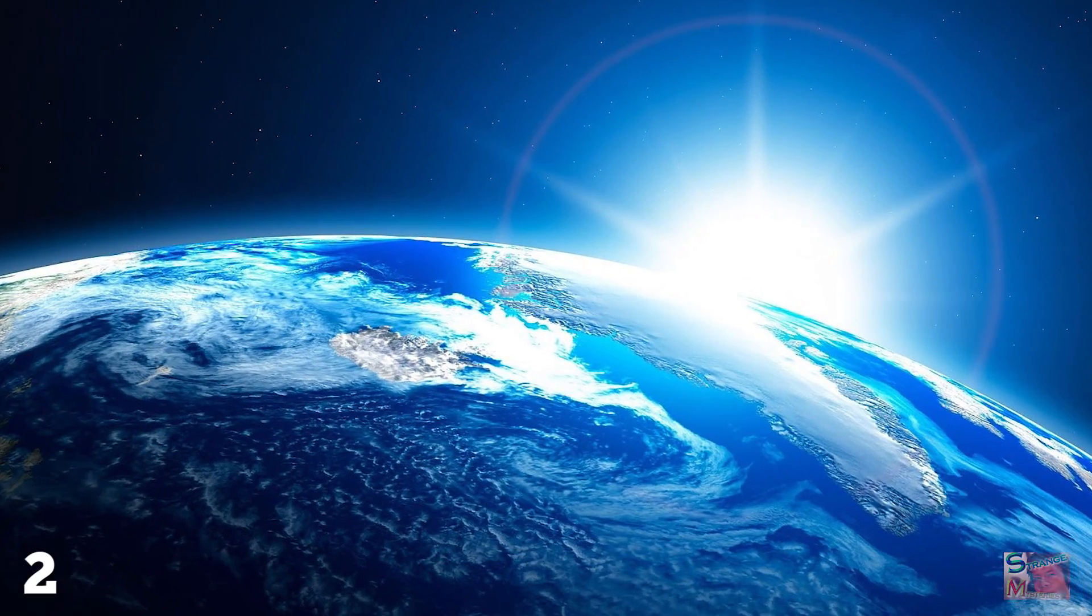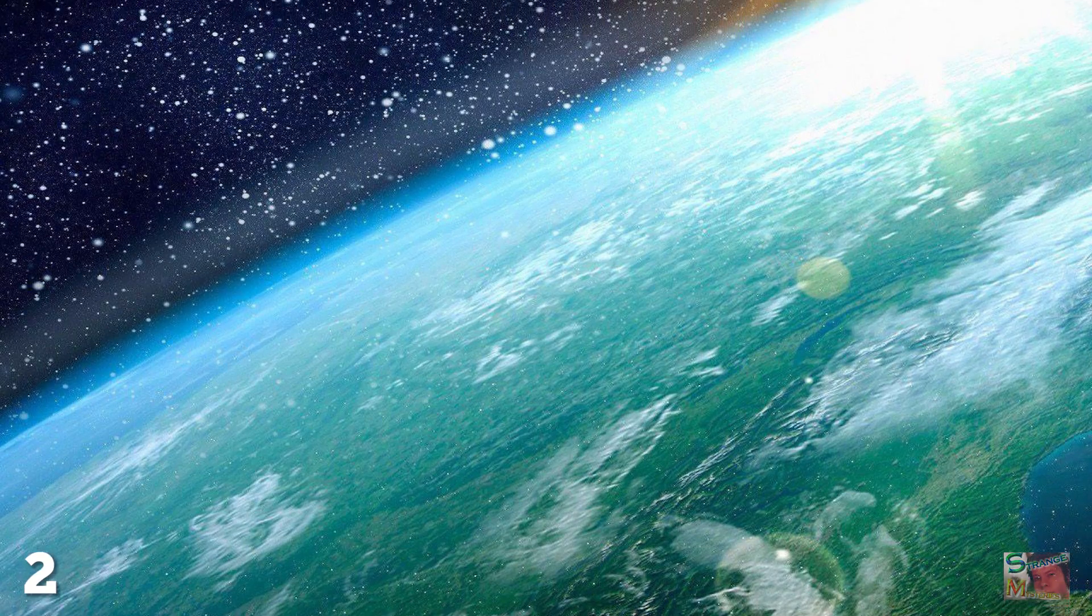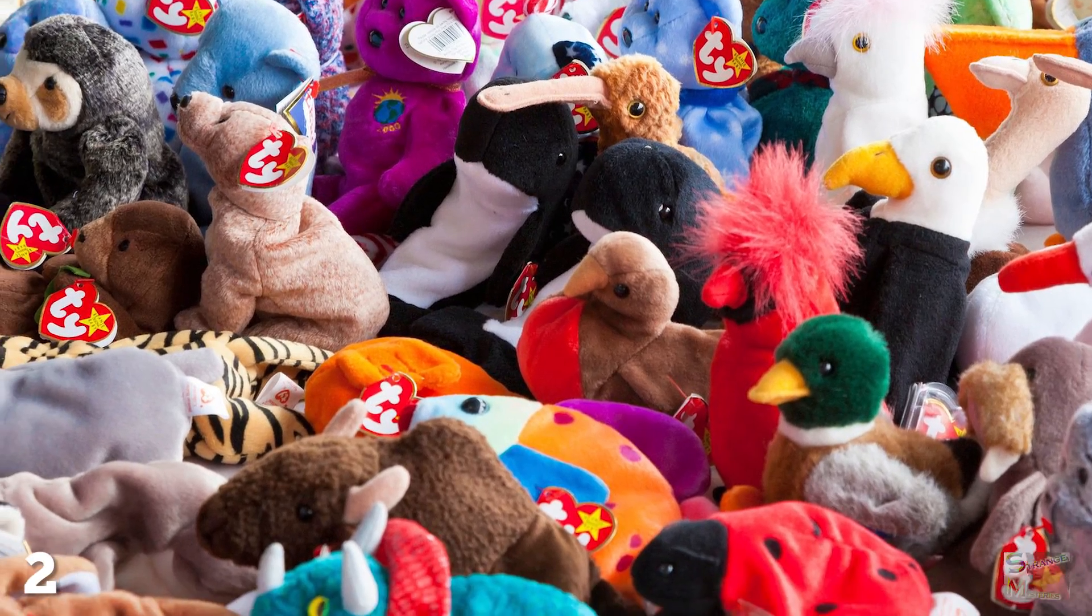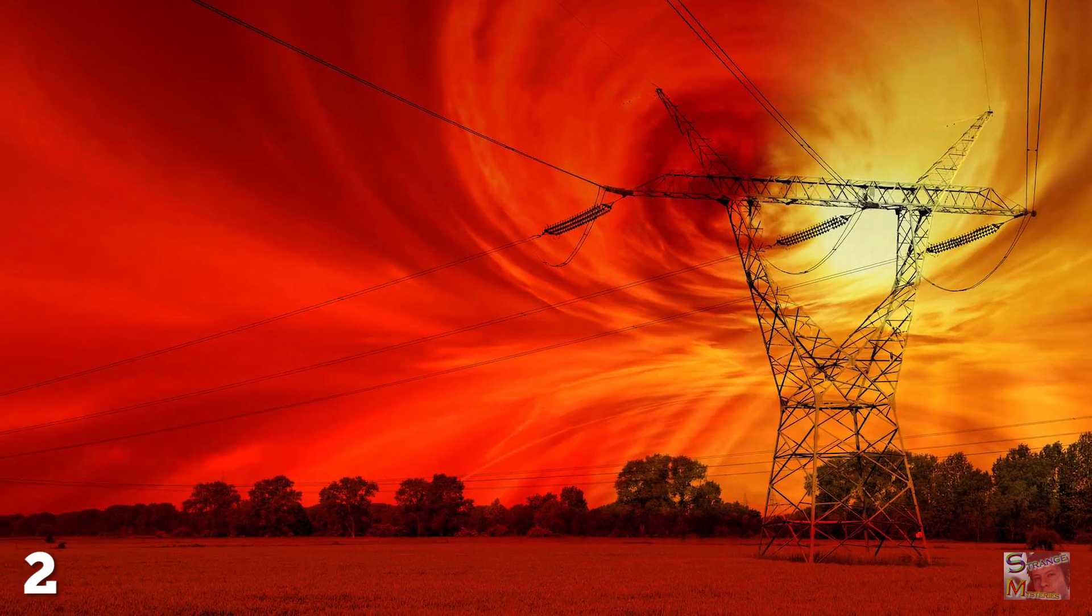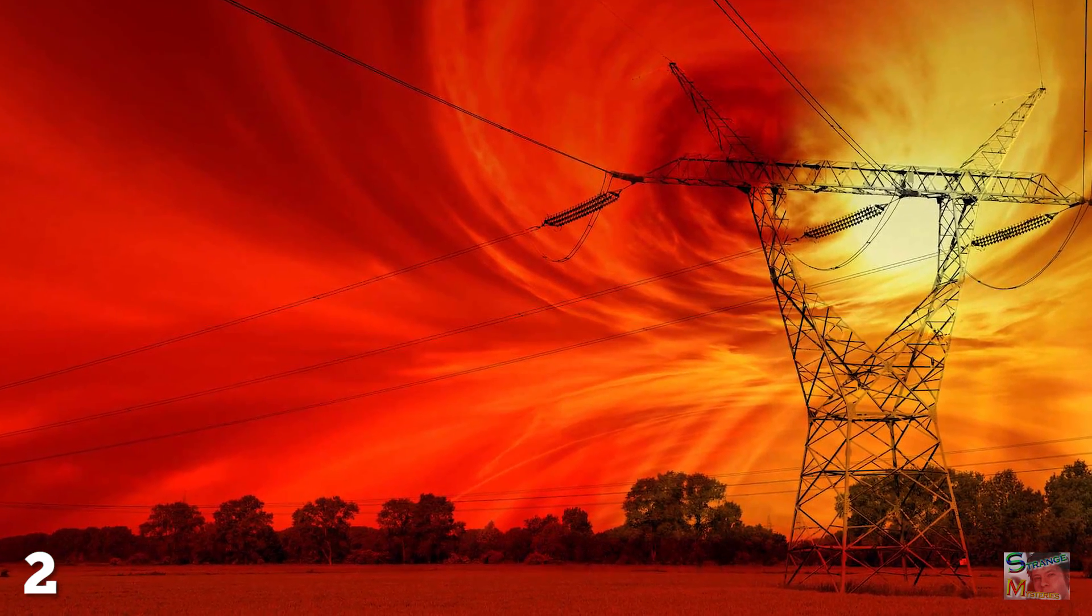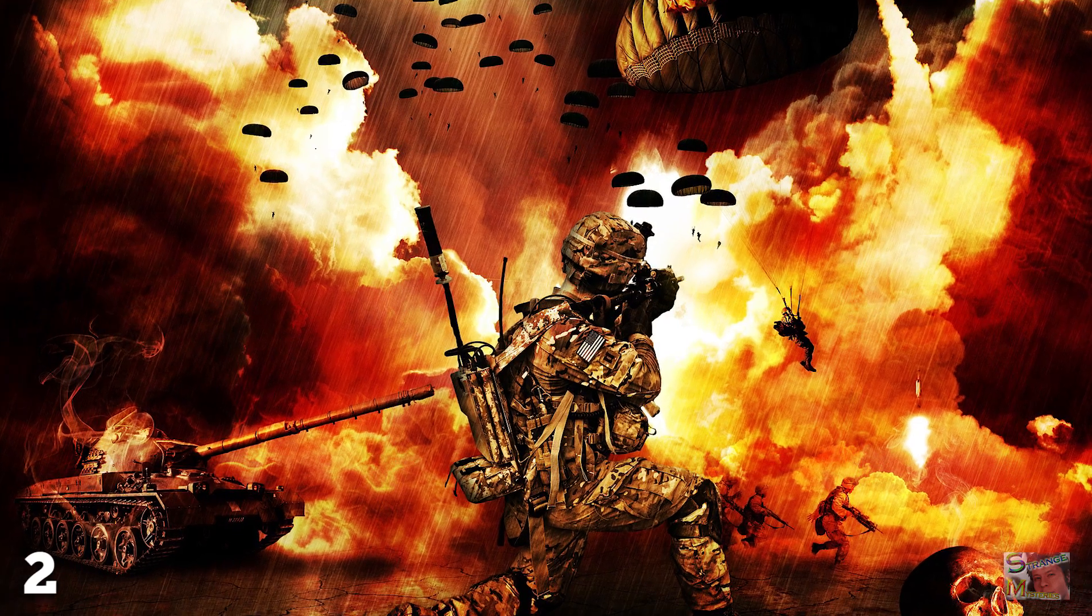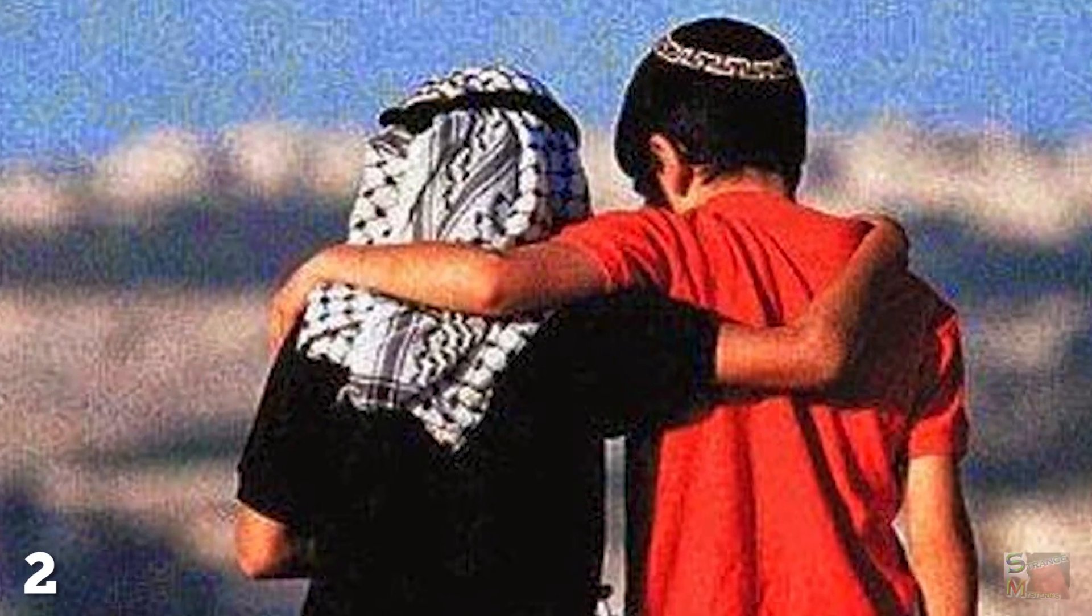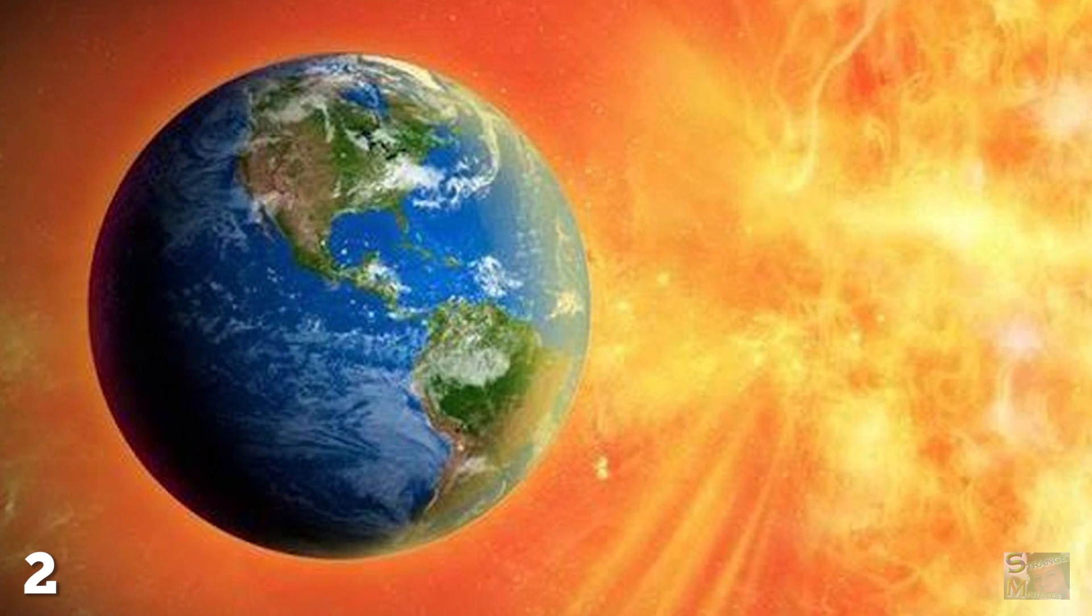Its first level describes a civilization that can harness 100% of the energy which reaches its home world from its parent star. As you might have guessed, we're not even close to achieving the bottom rung on that ladder yet. After 4.5 billion years, we're estimated to be at 0.73 on this scale. However, our progress of late has been pretty swift. It is thought we could reach Type 1 status within a hundred years, although this does require humanity to put aside its differences and work together.